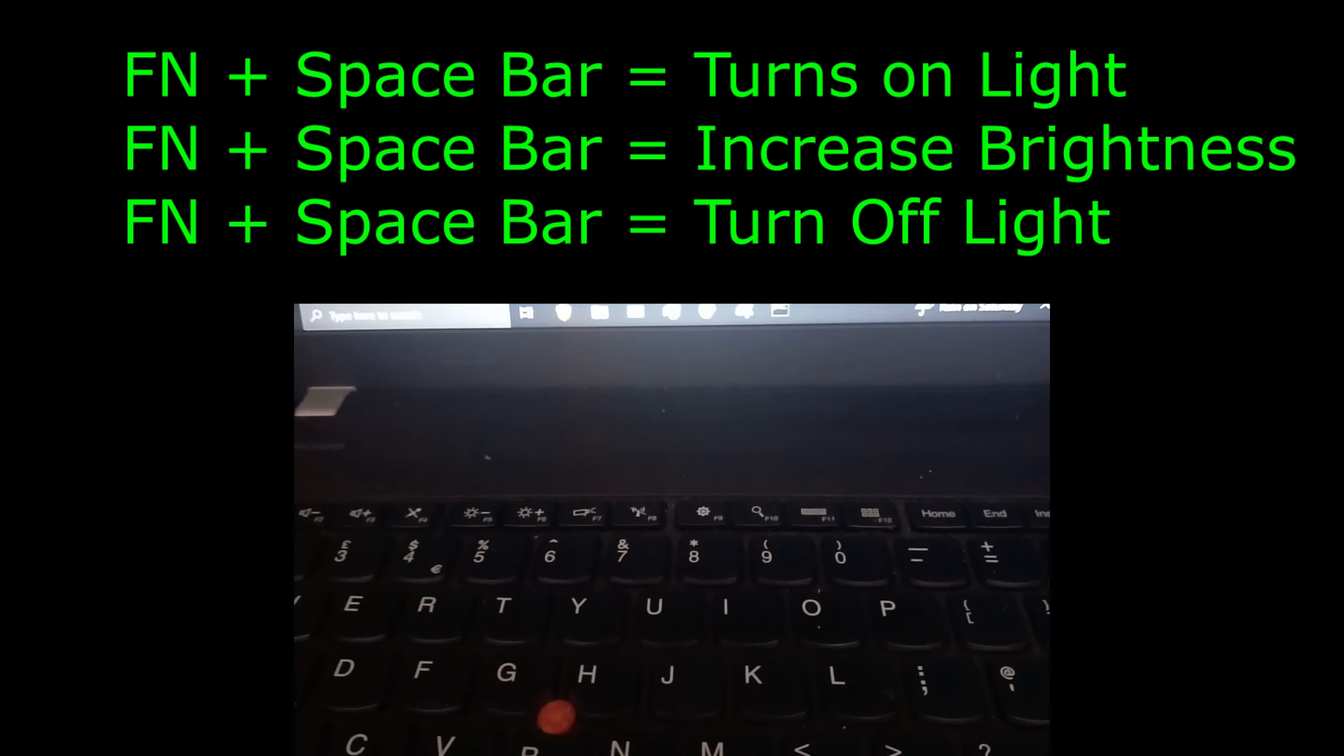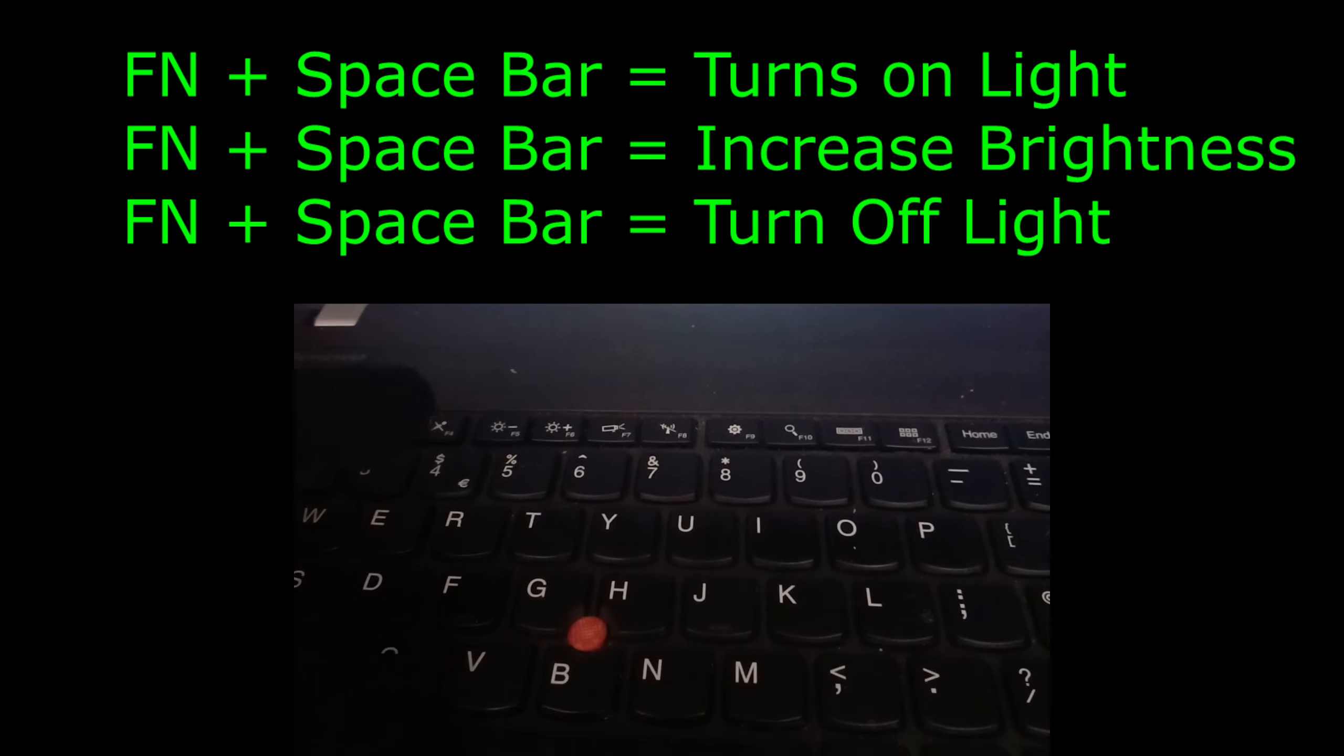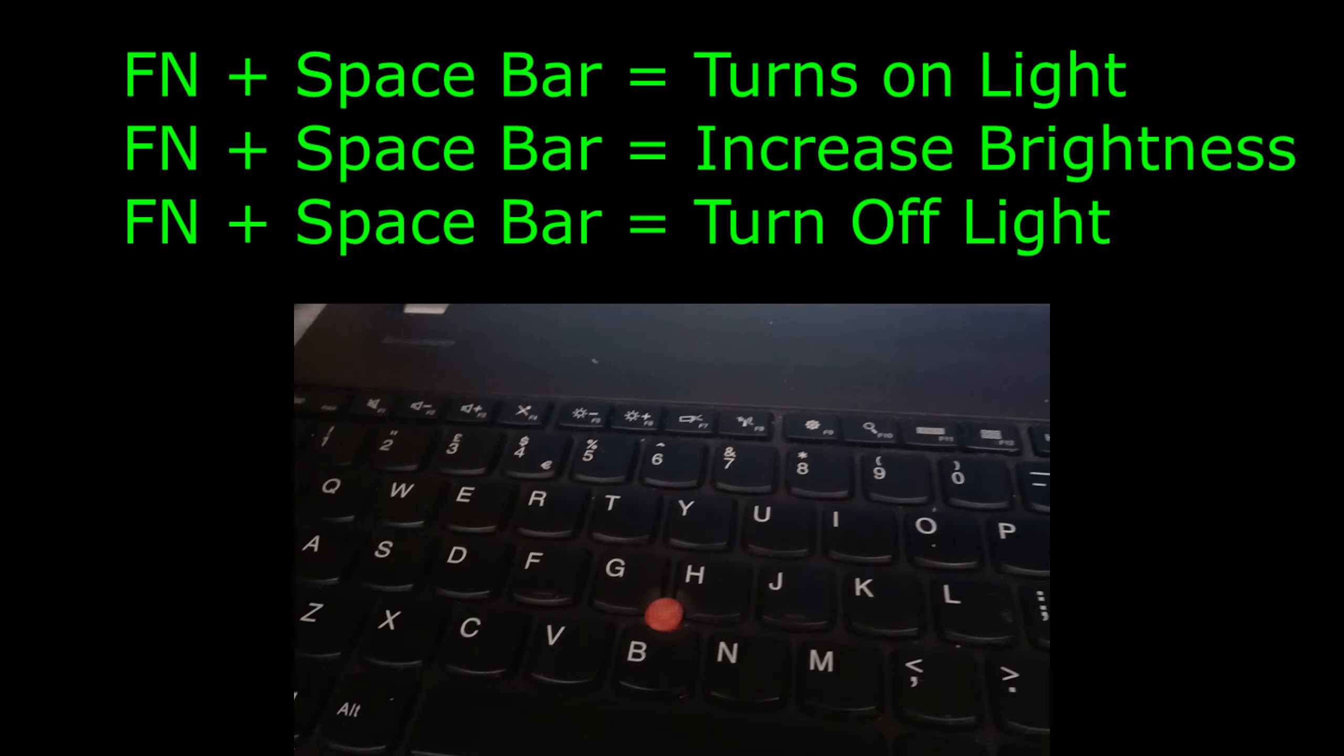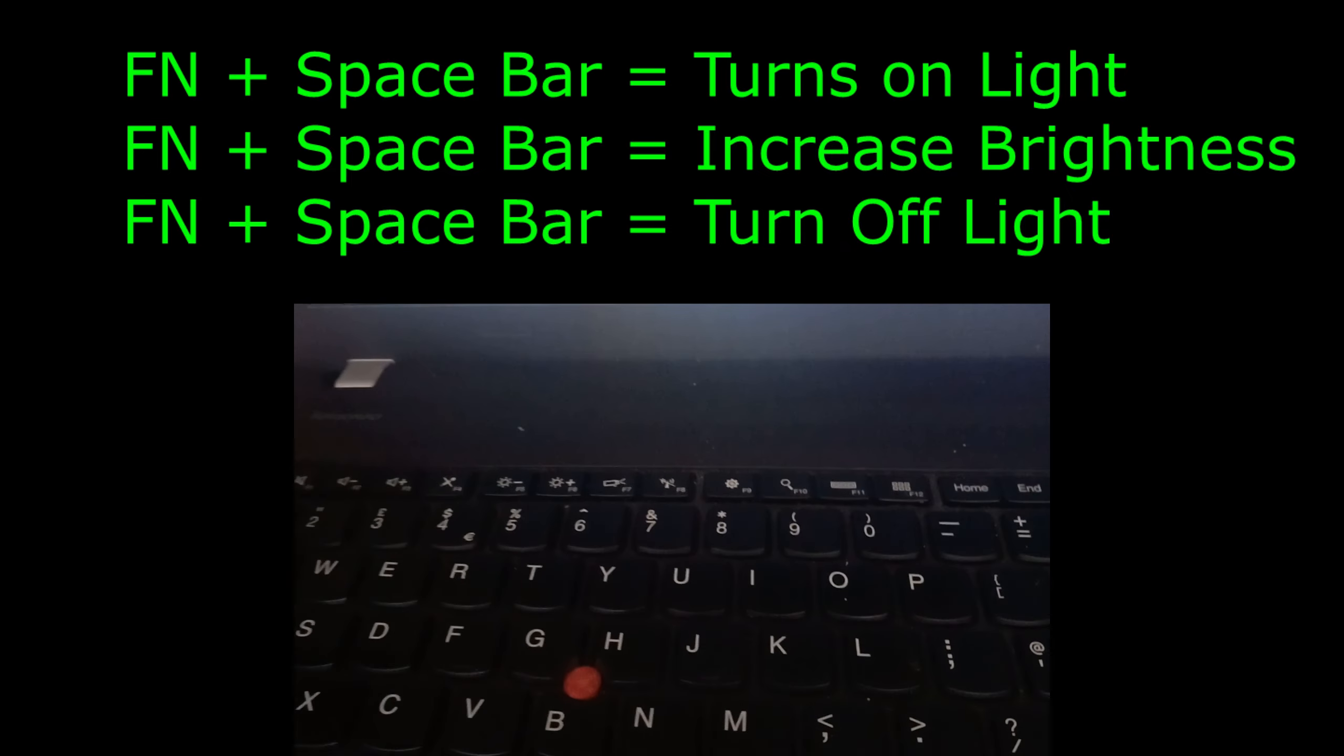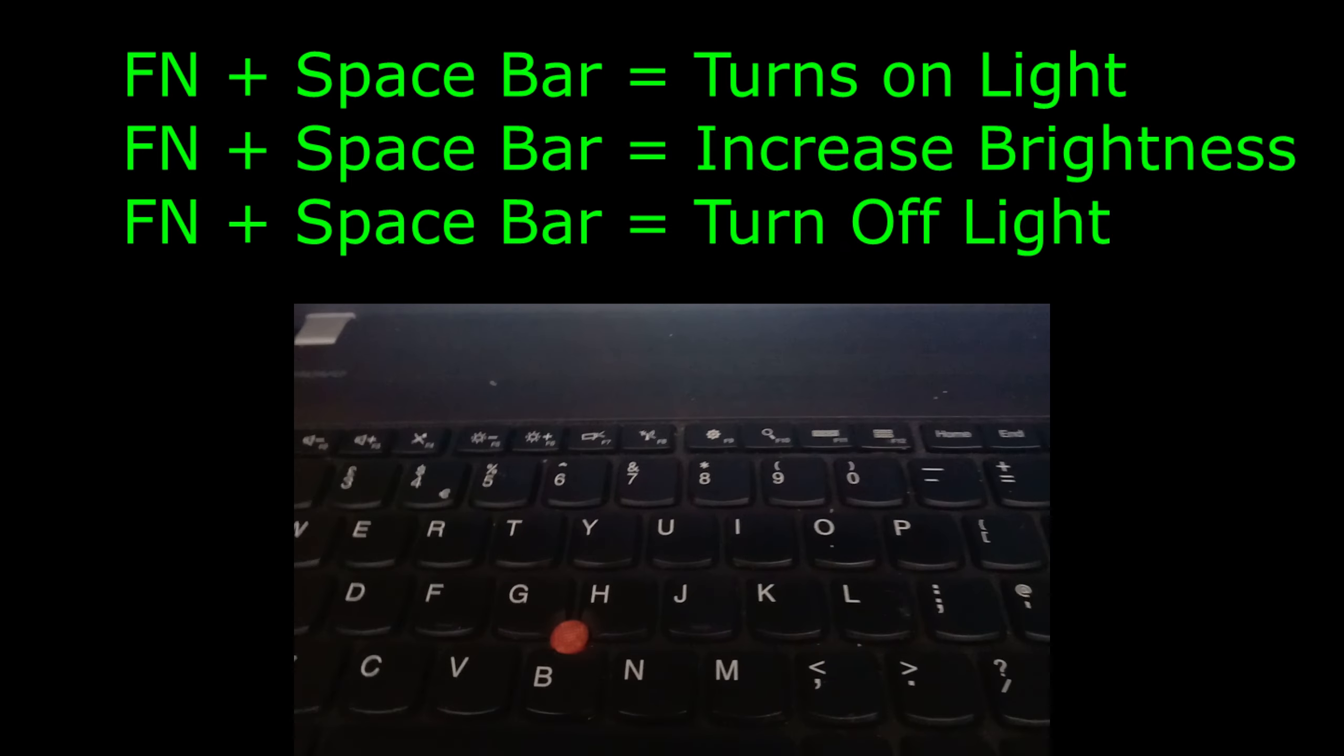And now if you want to turn off the lights again, you're going to do Fn plus space bar again. So you're just going to keep on spamming Fn and space bar until you get the lighting that you want. And then when you press on it enough times, it will then turn it off. So that's how you do it.